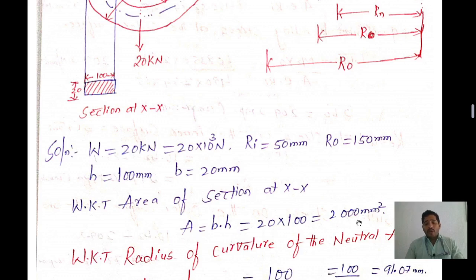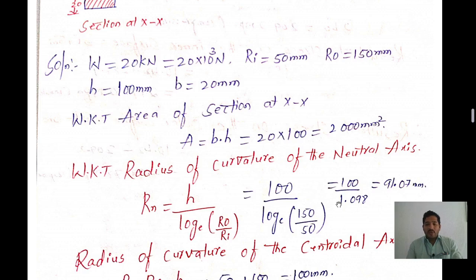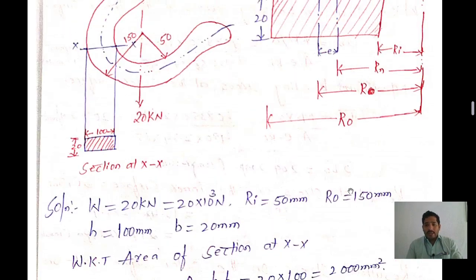Next, we find the radius of curvature of the neutral axis Rn. The formula is: Rn = height / ln(Ro / Ri) = 100 / ln(150/50) = 100 / ln(3) = 100 / 1.098 = 91.07 mm. This is the value of the radius of curvature of the neutral axis.